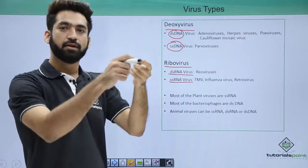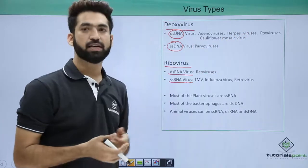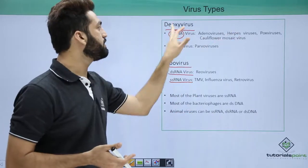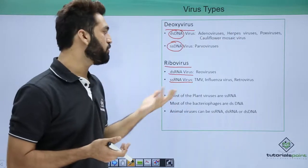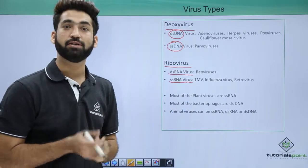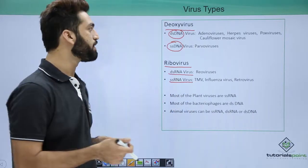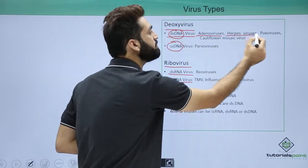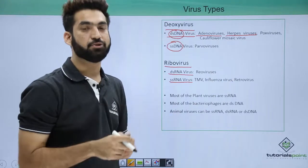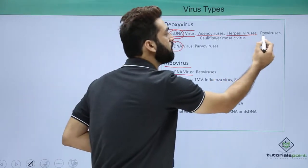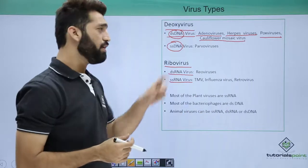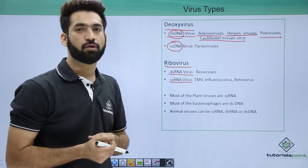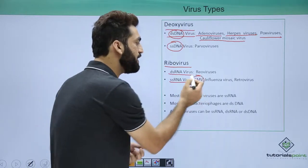For example, herpes virus is a double-stranded DNA virus. TMV is a single-stranded RNA virus. When you talk about double-stranded DNA viruses, you have adenoviruses, herpes viruses — herpes is a sexually transmitted disease — pox viruses, and cauliflower mosaic virus.